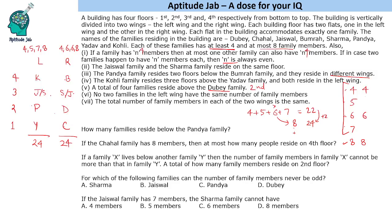Questions will have conditions and we answer accordingly. How many families reside below the Pandya family? Pandya is on the second floor, so there are two families below. If the Jayaswal family has eight members, then at most how many people reside on the fourth floor? With eight members for Jayaswal, we can have a maximum of six here and eight here, so the maximum number of people on the fourth floor is 14.